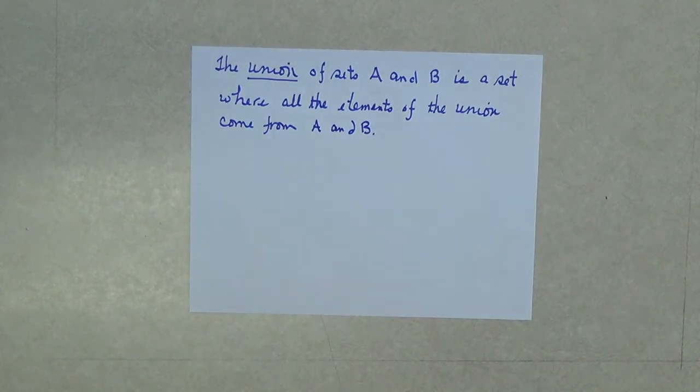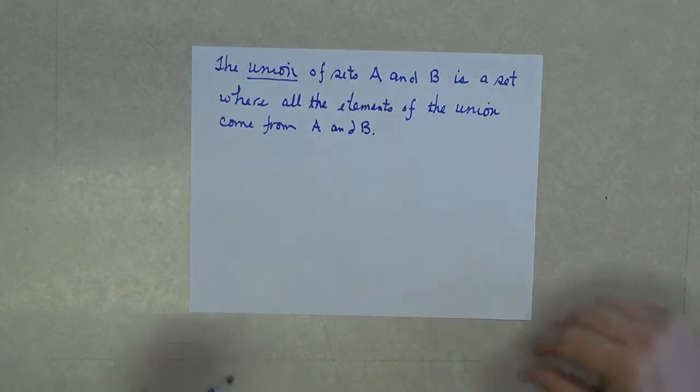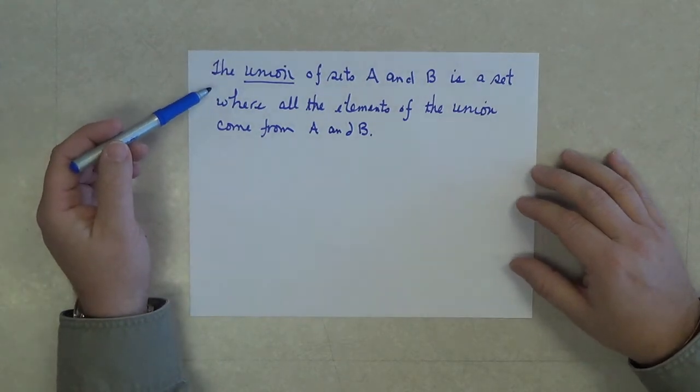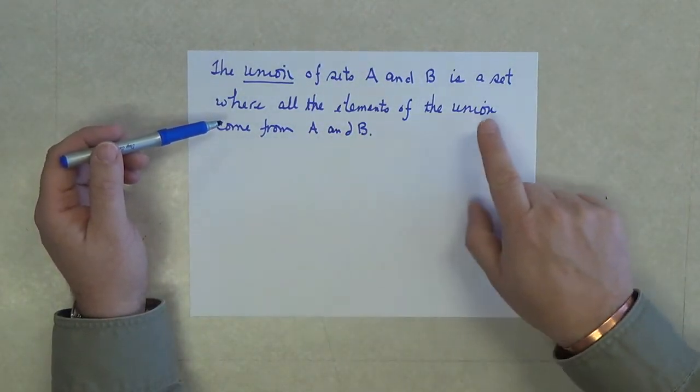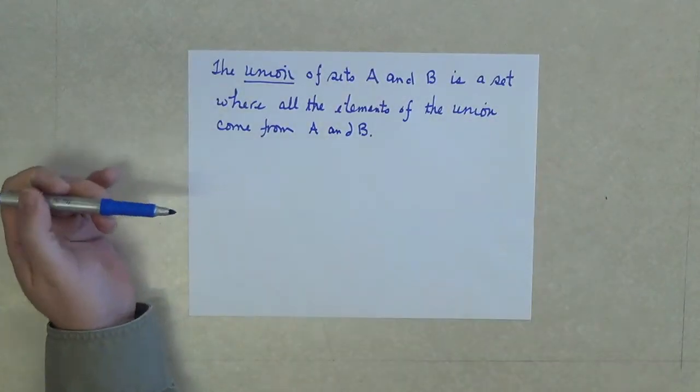This is a very not precise definition right now, but it's a definition I hope that helps you understand what's taking place. The union of these sets is a set, and all of the elements of the union come from A and B.